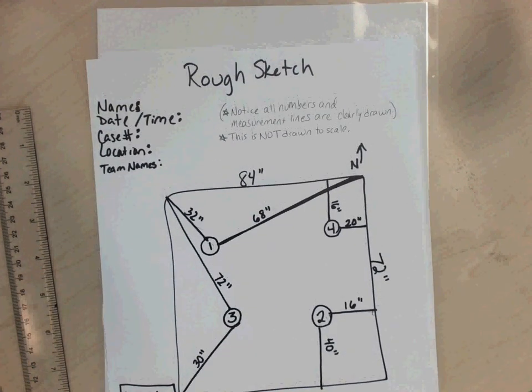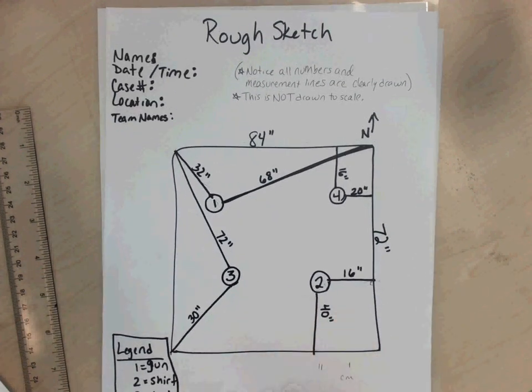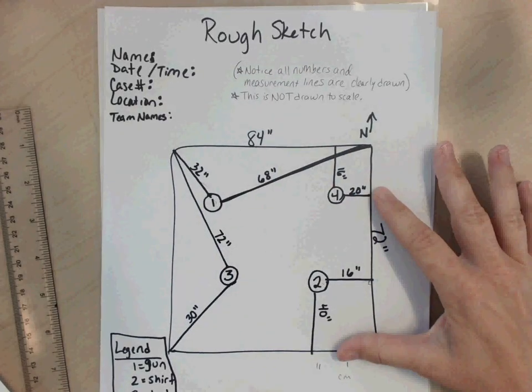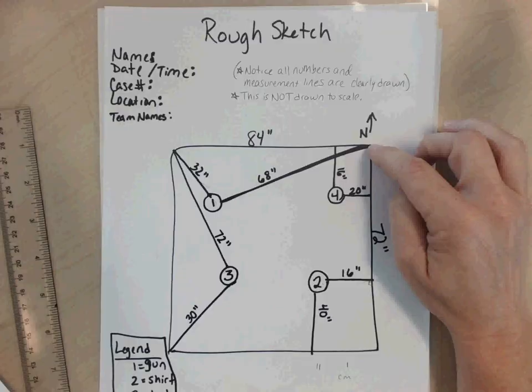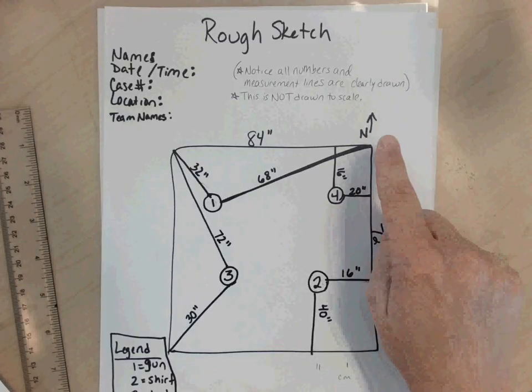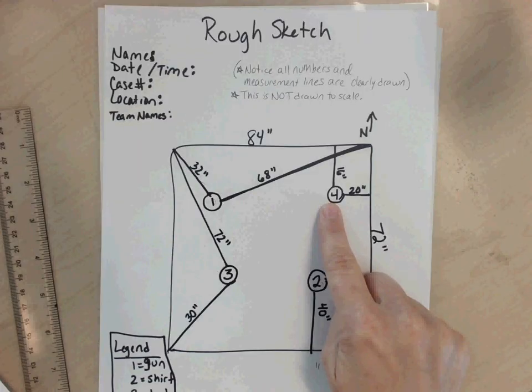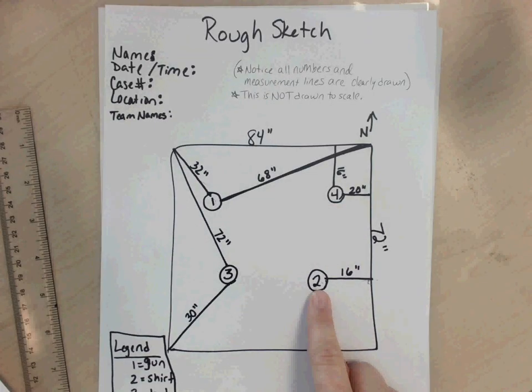This is the process of going from a rough sketch of a crime scene where all of your measurements are taken down on a piece of paper and everything is labeled either using triangulation, such as number one, or rectangular coordinates like number four evidence and number two evidence are done with.